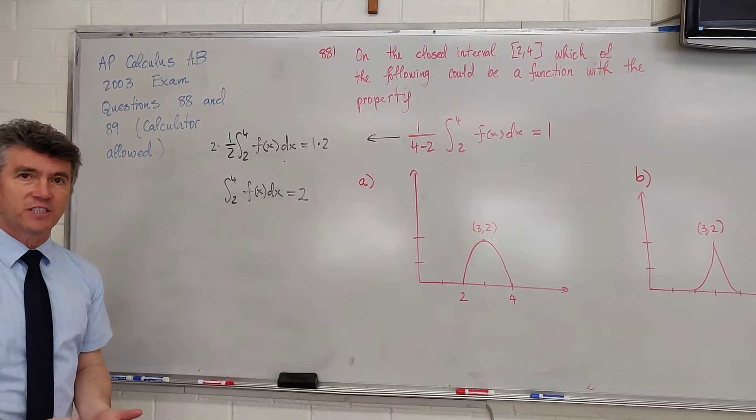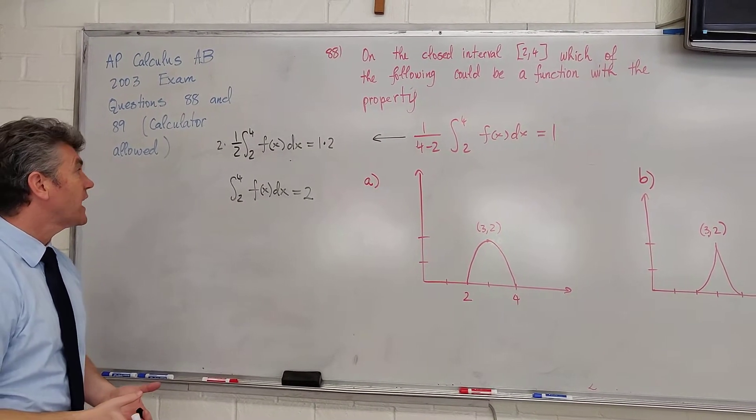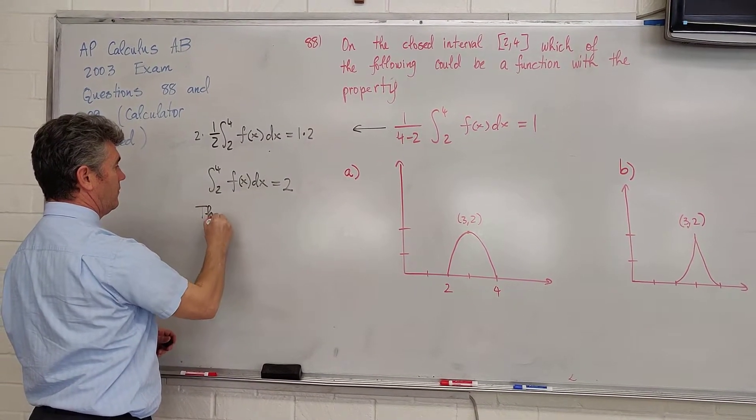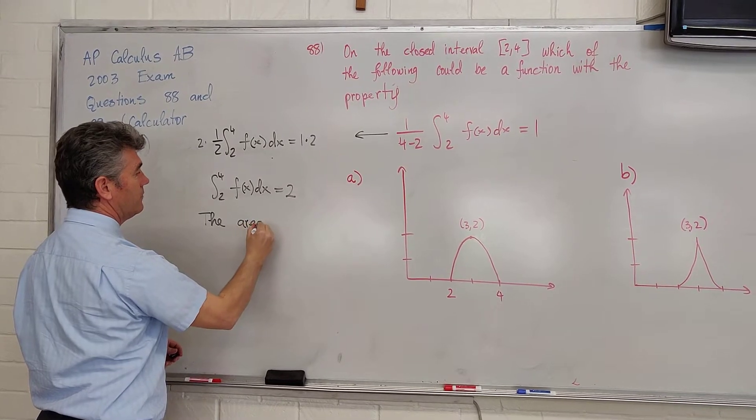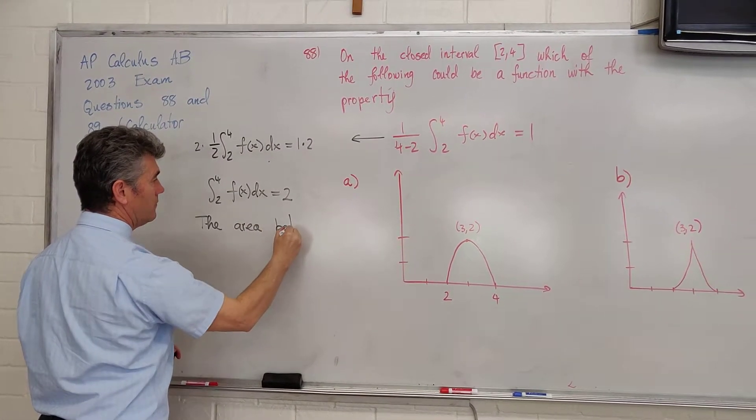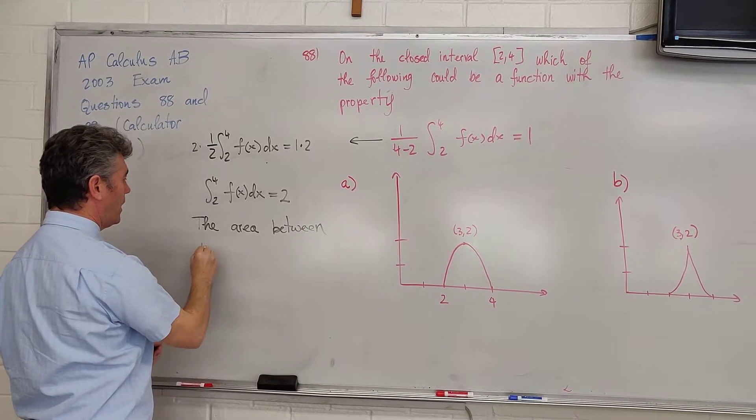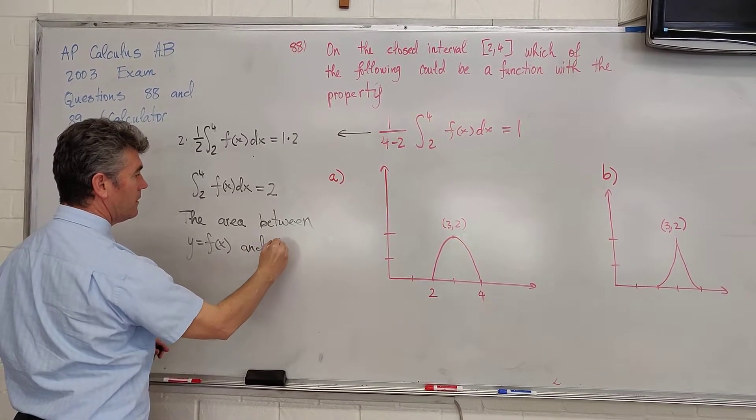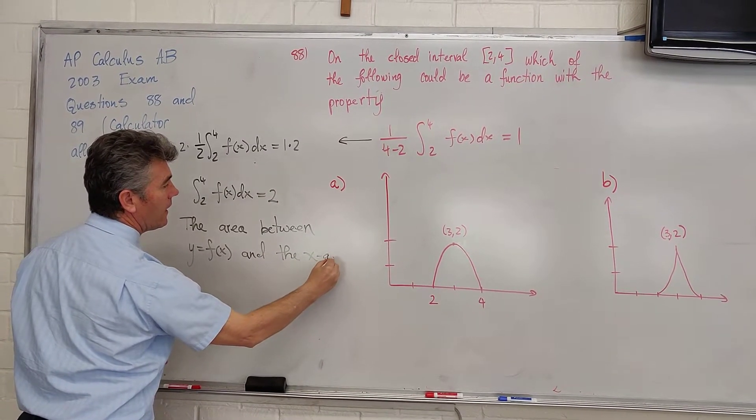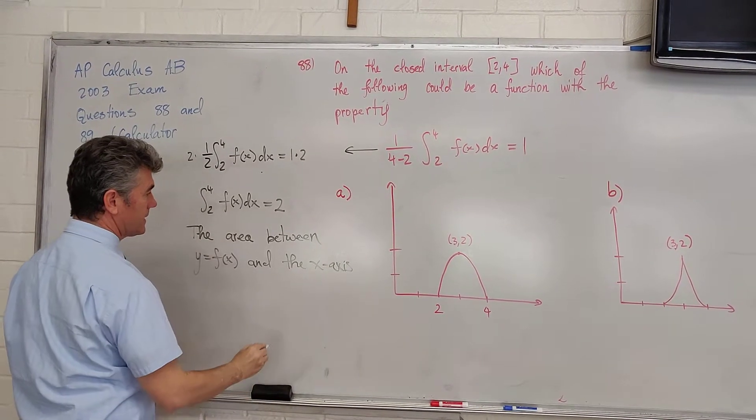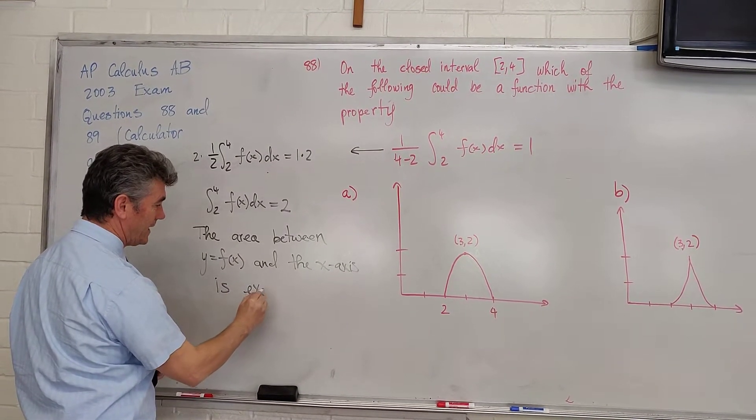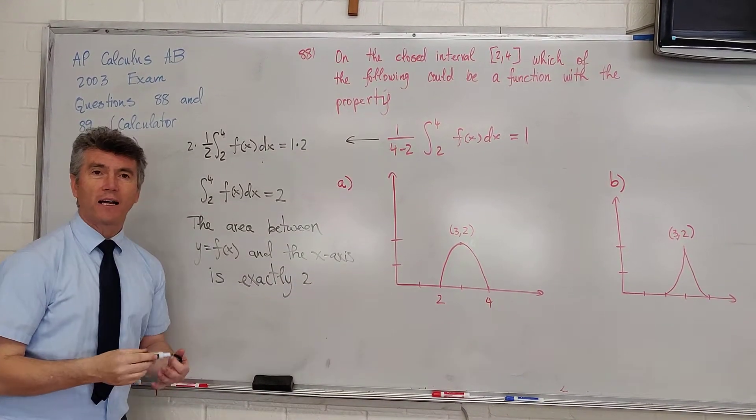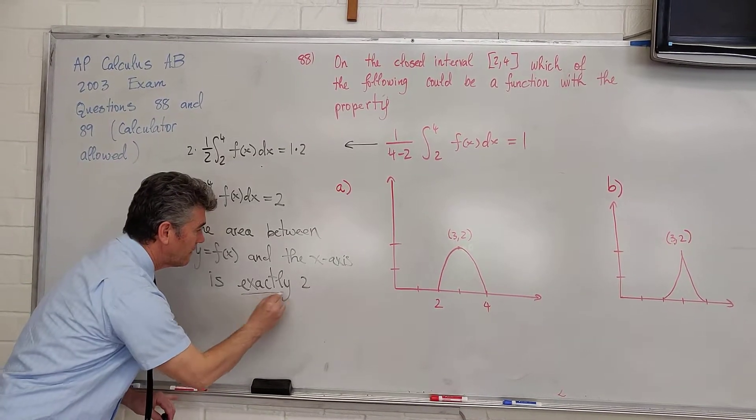Once you get to this point, ask yourself a question. What does this mean? It means the area between y equals f of x and the x-axis is exactly 2. Not approximately, but exactly. Why is this important?